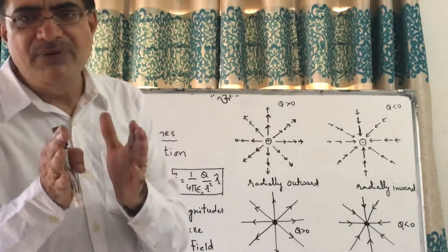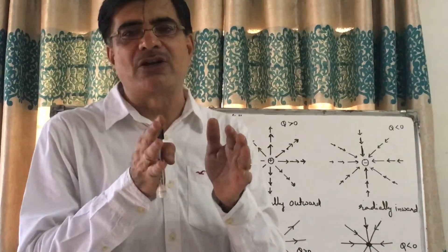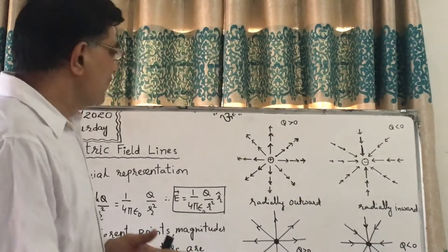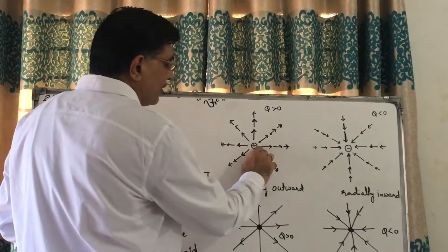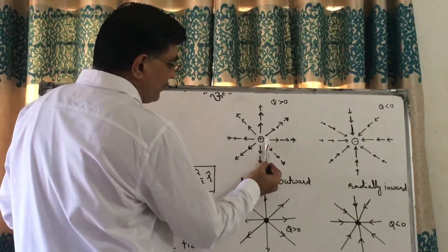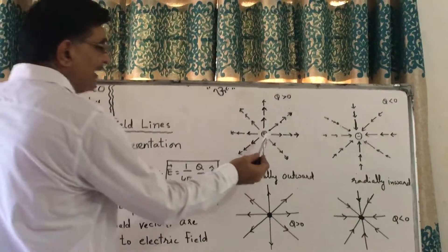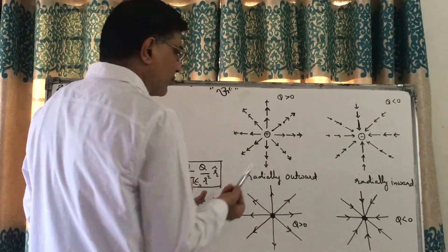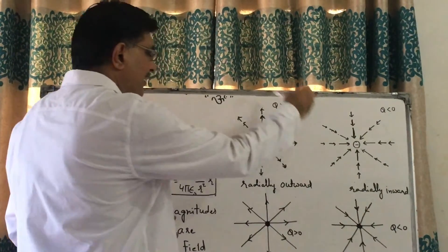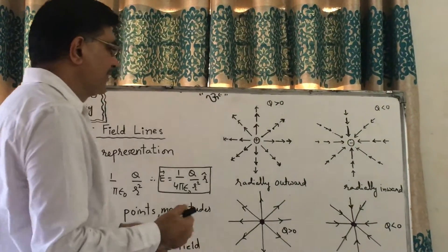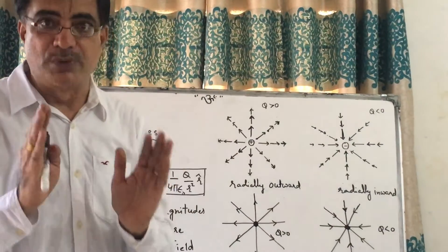Because the electric field intensity is inversely proportional to the square of the distance. Similarly, if I want to draw a line here, I have to put a unit positive charge, find out the electric field intensity according to this formula, and the length is proportional to its magnitude. Similarly, we will draw electric field lines — they are radially outward. For a positive charge, they are radially outward.